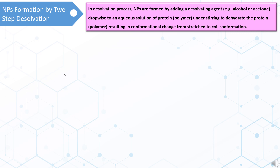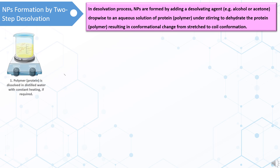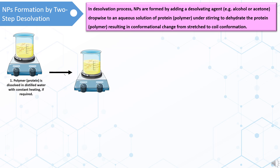In this method of nanoparticle formulation, a polymer or a protein is dissolved in distilled water with constant heating, if required. After getting this polymeric solution, a non-solvent — for example, acetone or ethanol — is added to the aqueous solution of the polymer.